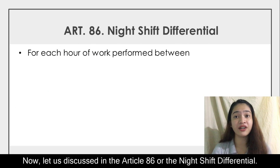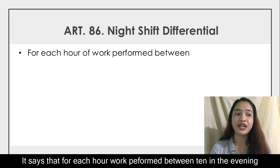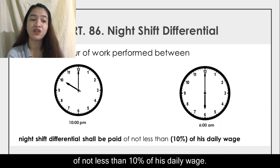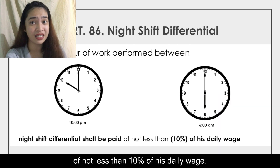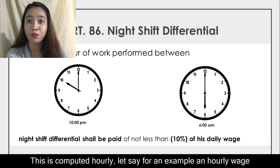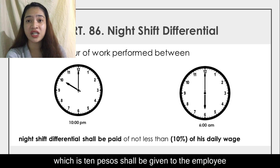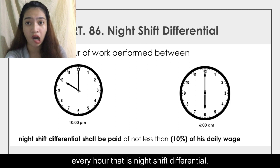Article 86, or the night shift differential, states that for each hour of work performed between 10 in the evening until 6 in the morning, night shift differential shall be paid of not less than 10% of the daily wage. This is computed hourly. For example, if an hourly wage of an employee is 100 pesos, then 10%, which is 10 pesos, shall be given to the employee every hour. That is night shift differential.